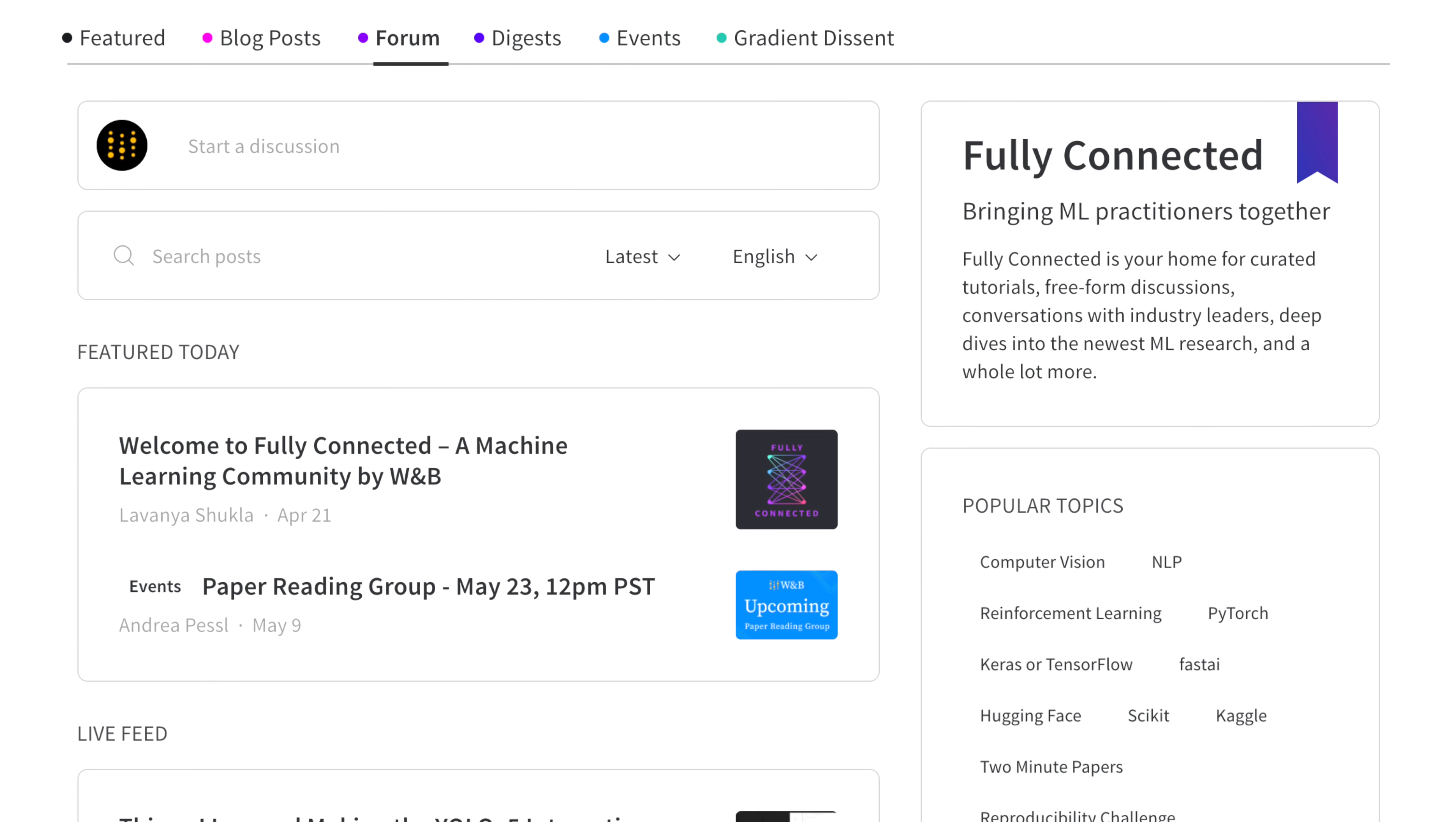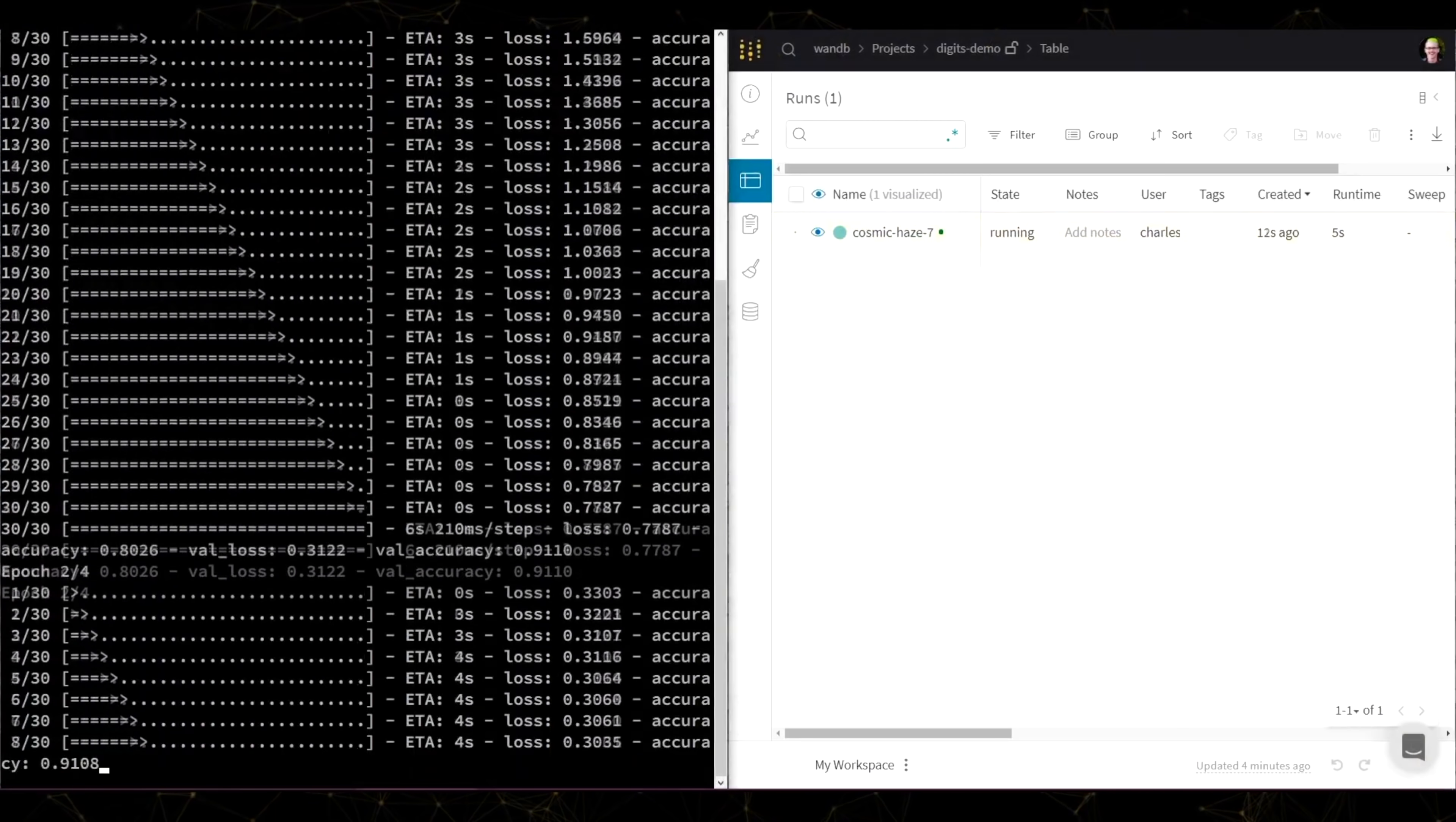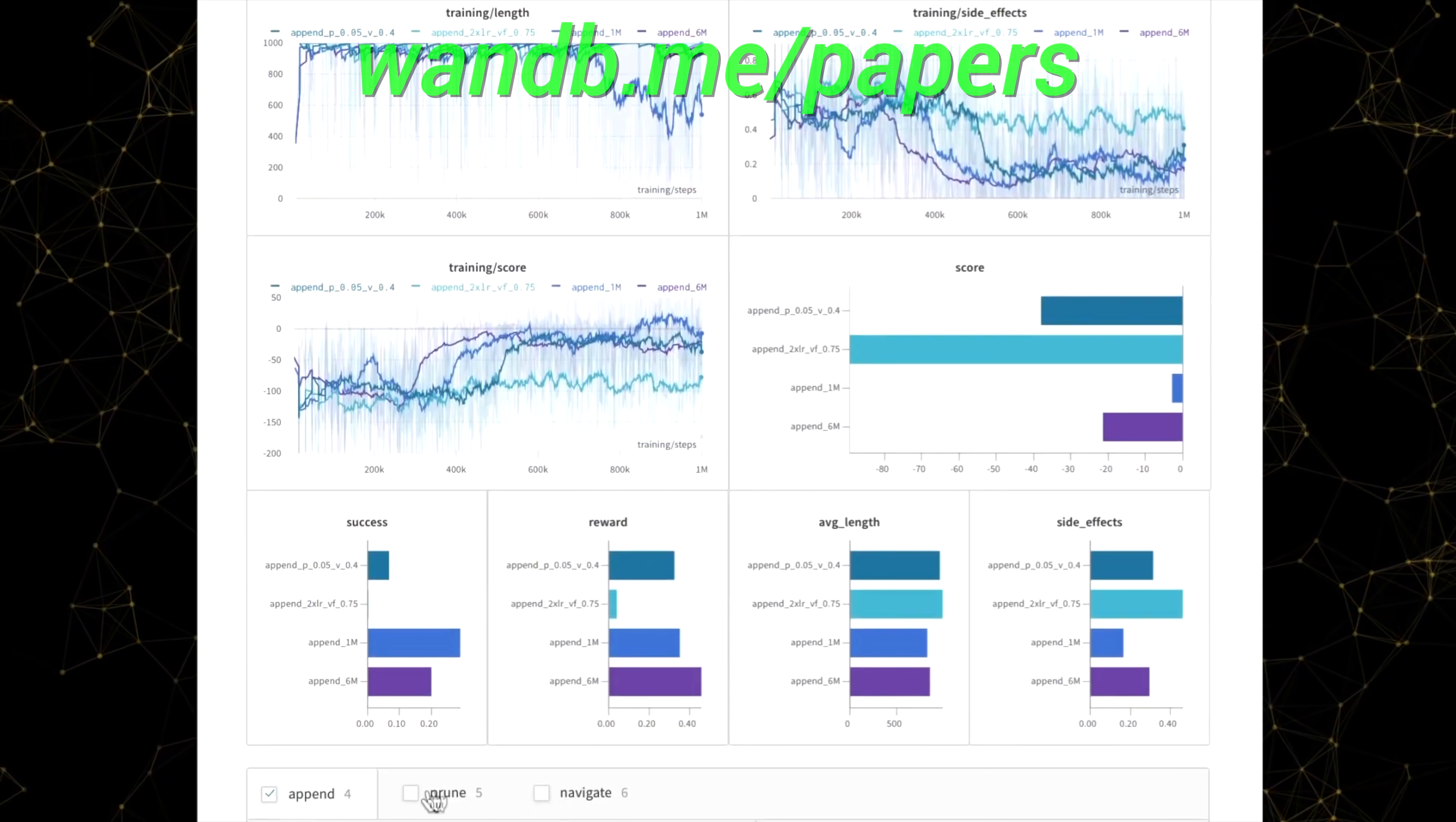This video has been supported by Weights and Biases. Check out their recent offering, Fully Connected, a place where they bring machine learning practitioners together to share and discuss their ideas, learn from industry leaders, and even collaborate on projects together. You see, I get messages from you fellow scholars telling me that you have been inspired by the series, but don't really know where to start. And here it is! Fully Connected is a great way to learn about the fundamentals, how to reproduce experiments, get your papers accepted to a conference, and more! Make sure to visit them through wnb.me slash papers or just click the link in the video description! Our thanks to Weights and Biases for their longstanding support and for helping us make better videos for you!